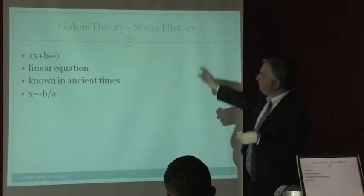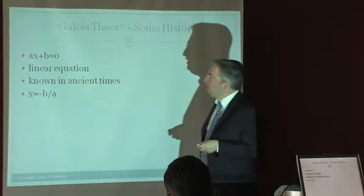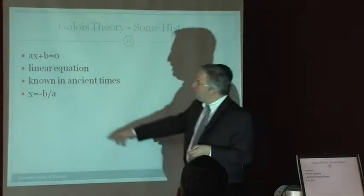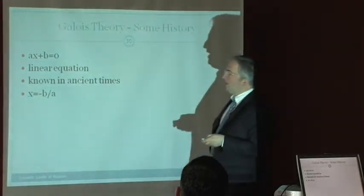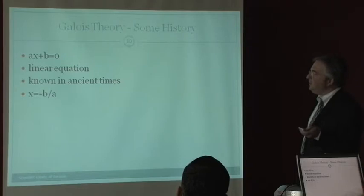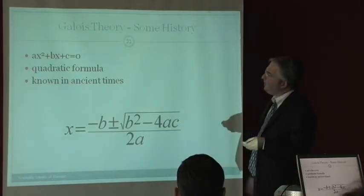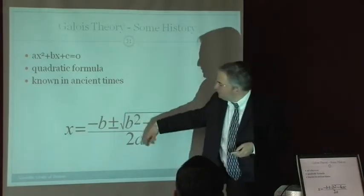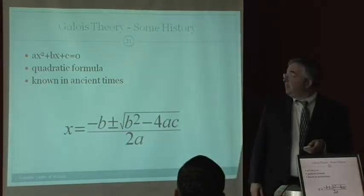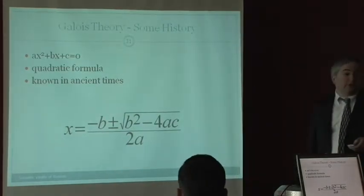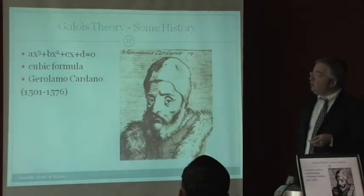Some history. So, let's go back to the history. This is called a linear equation, and it was known in ancient times, and you can solve it, x is equal to minus p over a. Given a and b, you can solve that. Here's a quadratic equation, ax² + bx + c. Given a, b, and c, you can figure out what x is. And also, this was also known in ancient times.